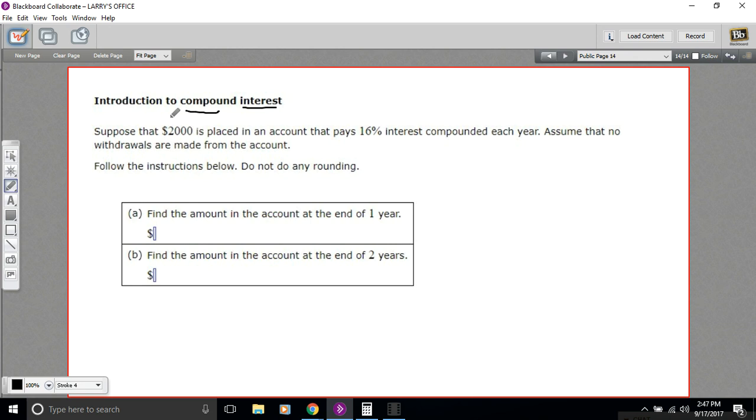So the first year, if you got 16 percent, it'd be $2000 plus something. And then the second year, the 16 percent would be on that $2000 plus something, so it grows over time. Let's see how this works in this particular problem.